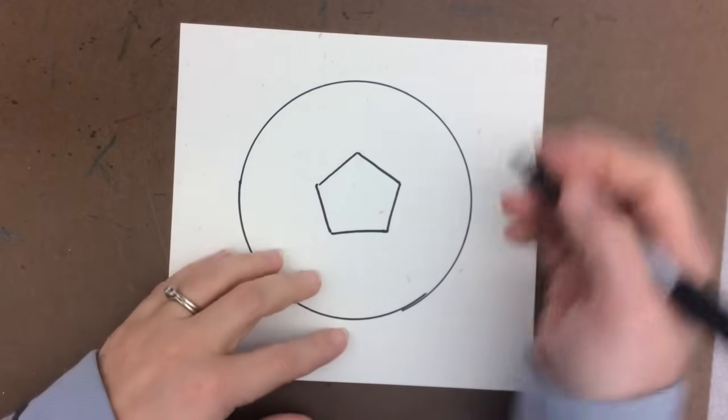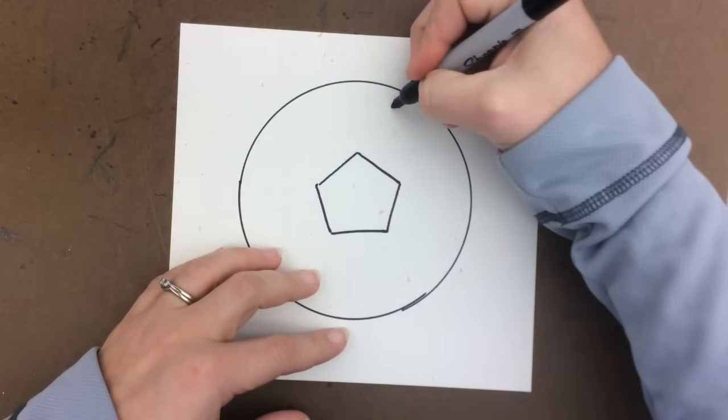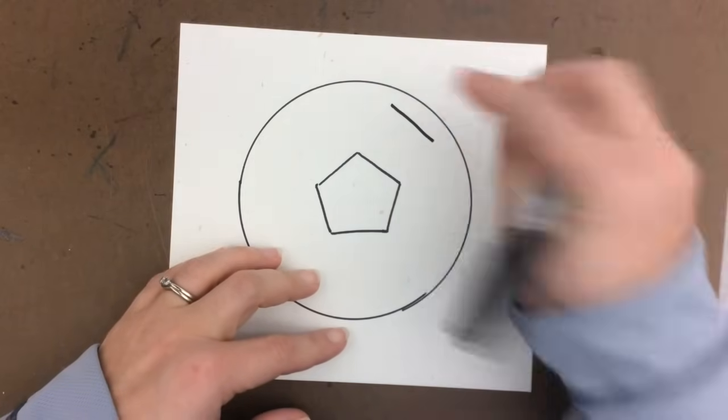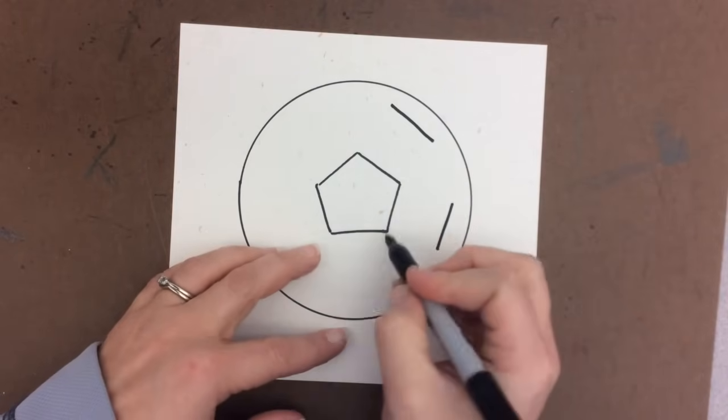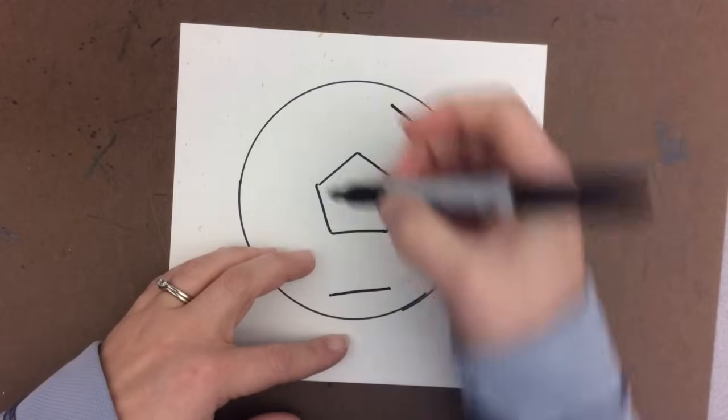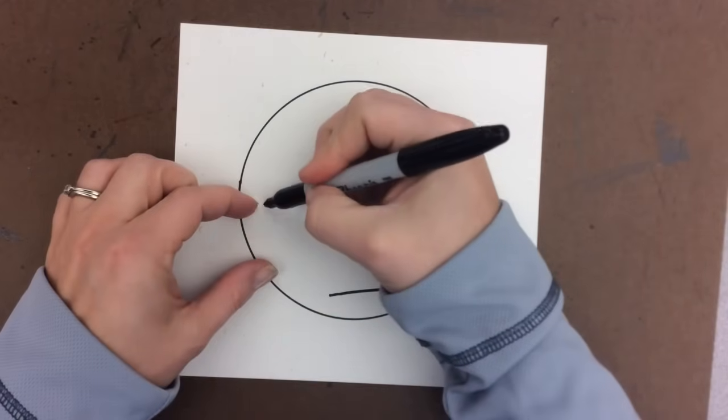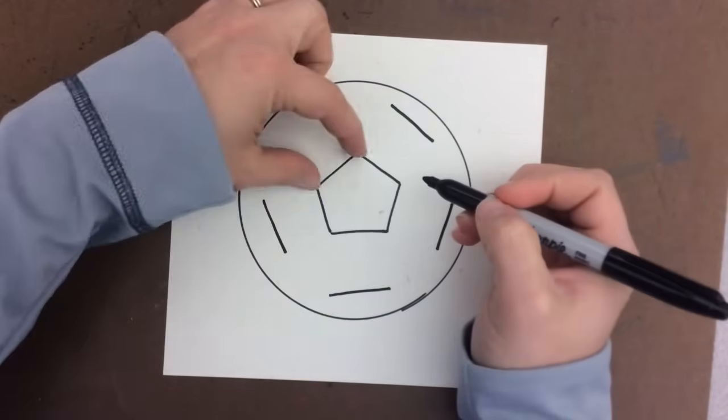From this part, we're going to take this line and move it out right close to the edge. Take this line, move it out to the edge. We'll bring each line out to extend the pentagon.